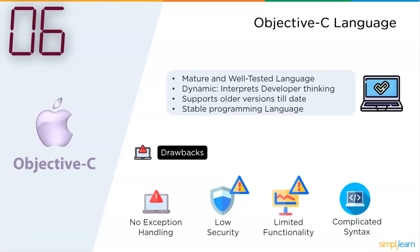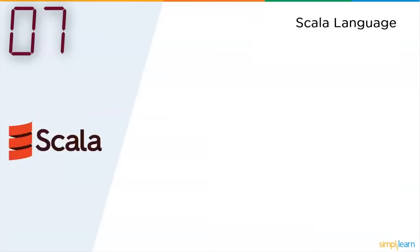The seventh programming language considered as fading away is Scala. Scala is a general-purpose programming language providing support for both object-oriented programming and functional programming, with a strong static type system. Scala is designed to be concise, and many of its design decisions aim to address criticisms of Java.